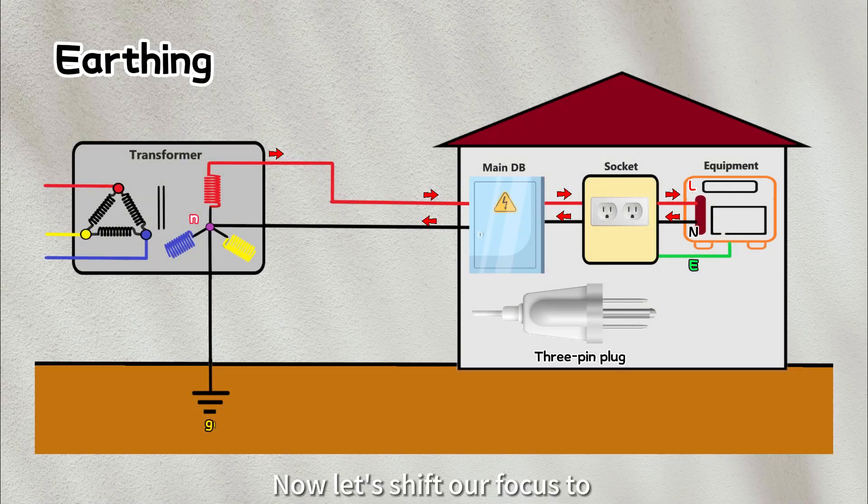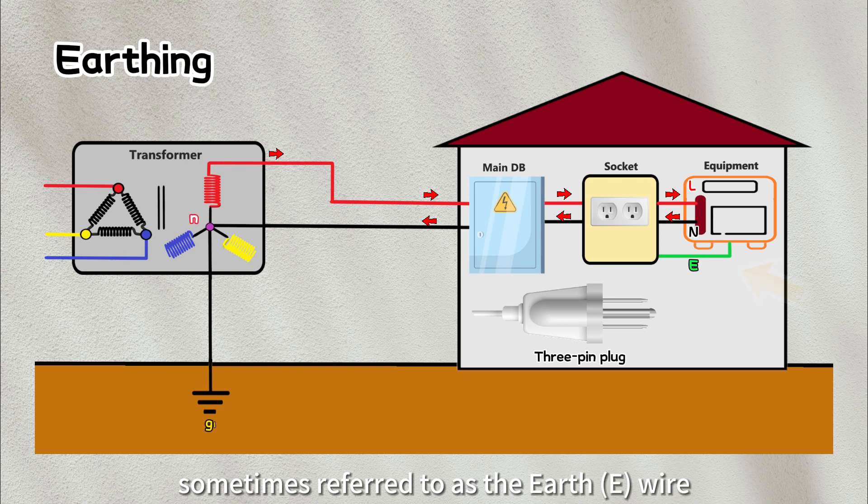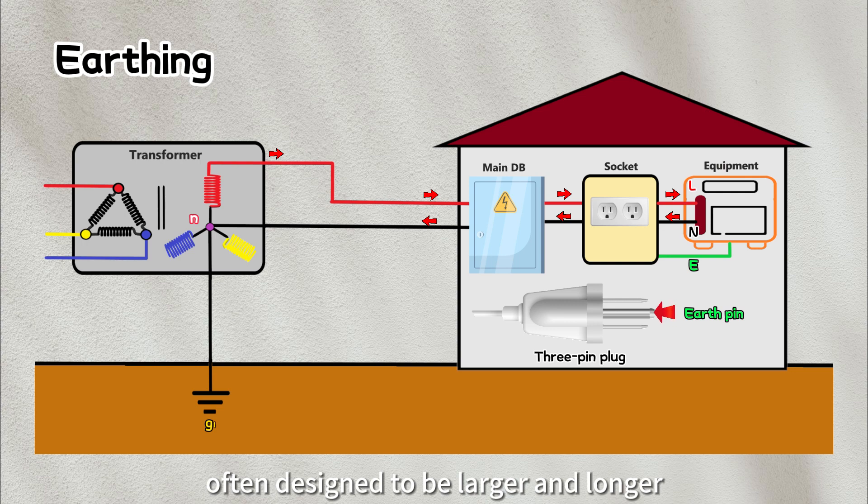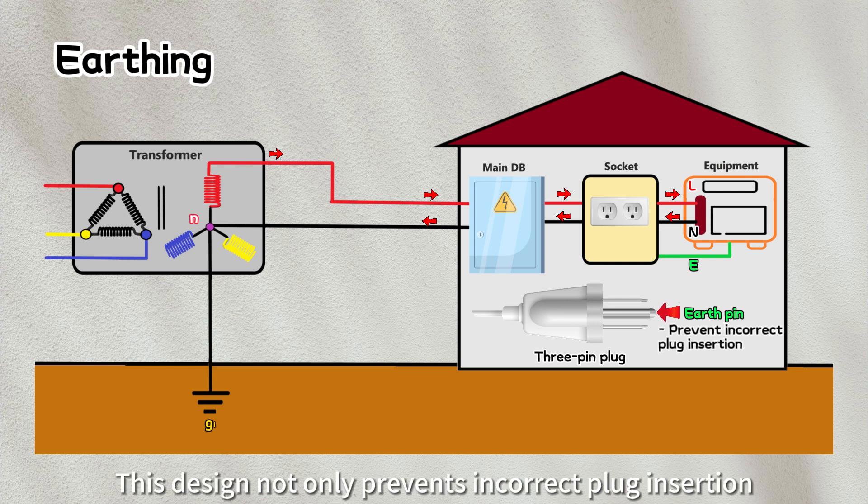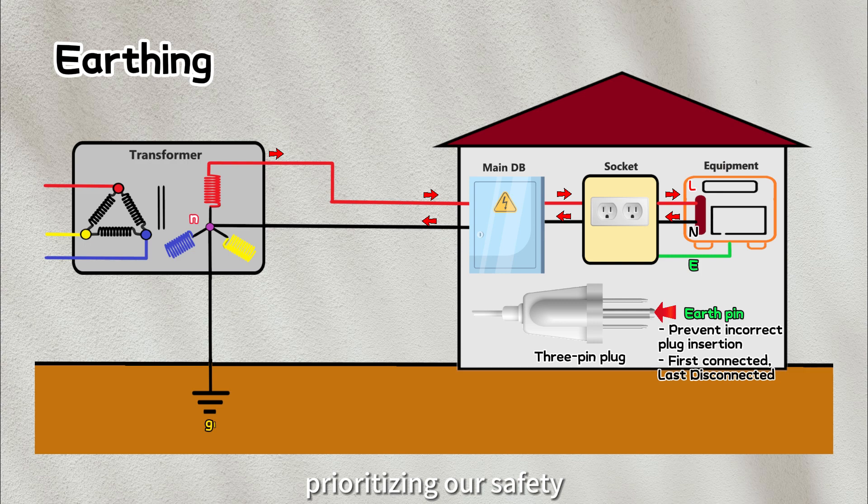Now, let's shift our focus to the topic of our discussion today, the ground wire, sometimes referred to as the earth wire. At the plug, it is easily distinguishable with the earth pin often designed to be larger and longer. This design not only prevents incorrect plug insertion, but also ensures that earth is first connected and last disconnected, prioritizing our safety.